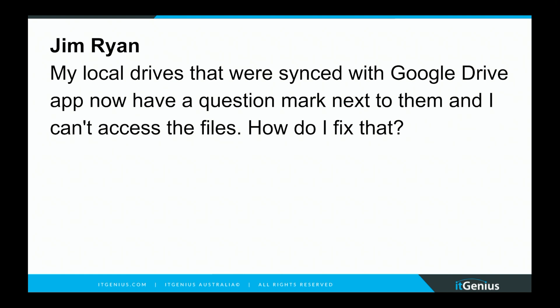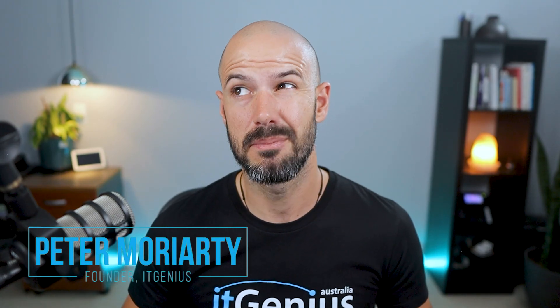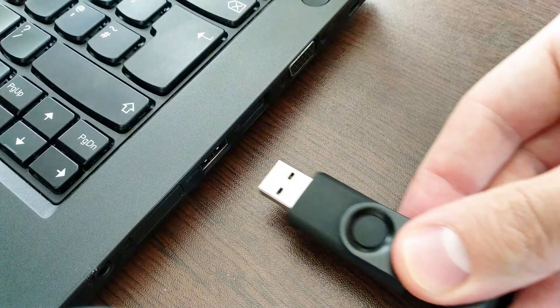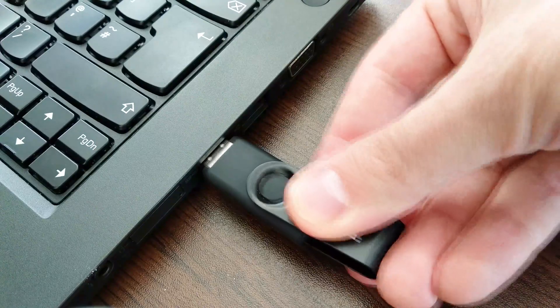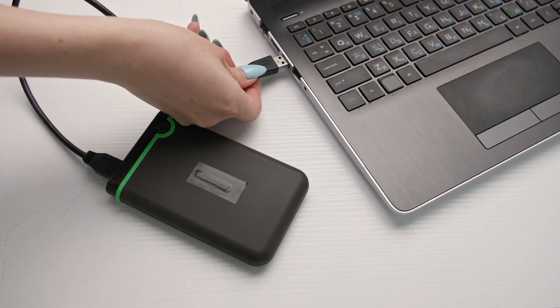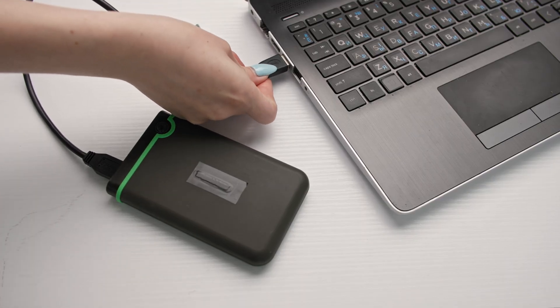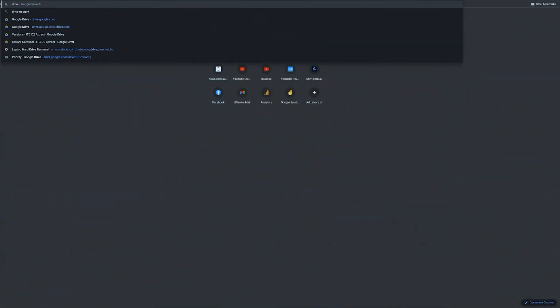I'm going to assume that a question mark next to a Google Drive file means something like maybe you had your Google Drive synchronized to an external drive, like a USB drive, or maybe a D, E, or F drive in your local storage, and that was changed. That's really the only scenario where Google could lose access to a certain set of files, but I'm going to Google it just to triple check.